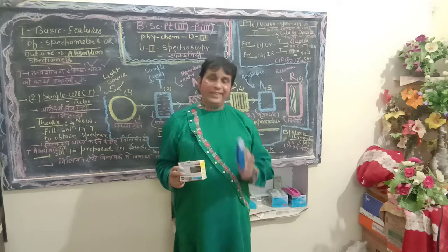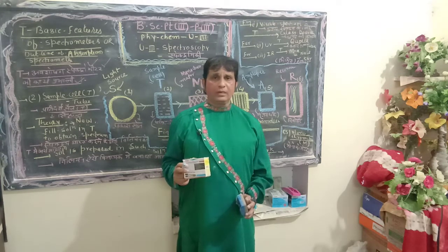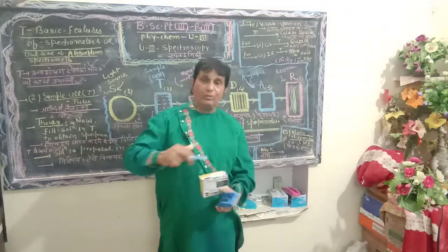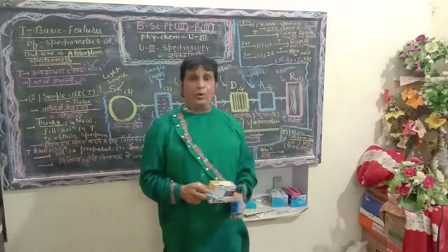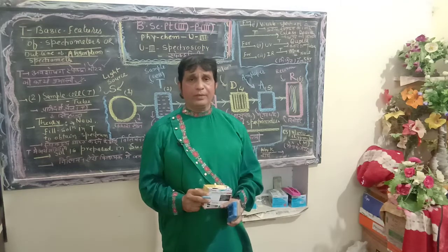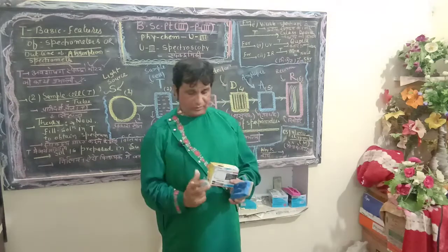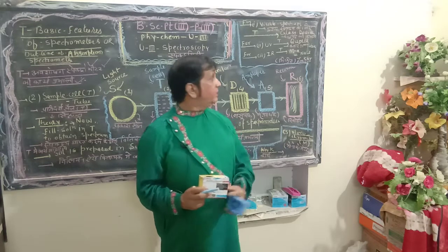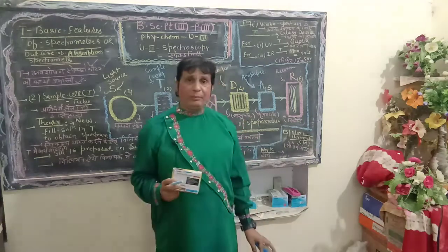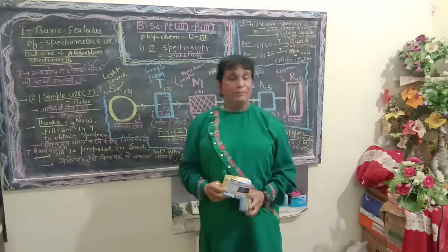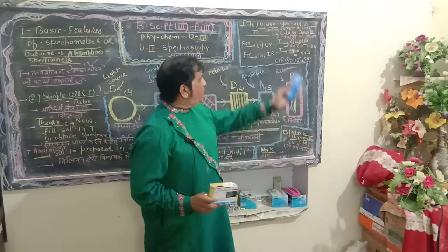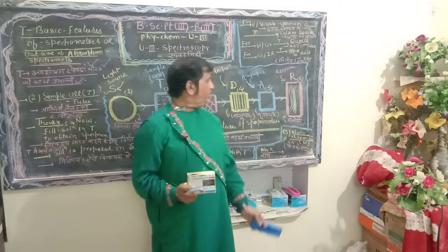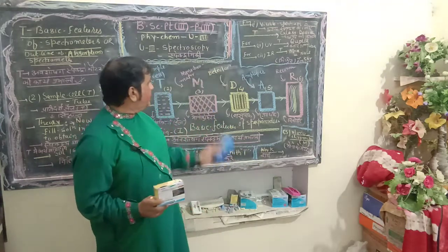To repeat: the sample cell T material used depends on the spectrum type. For visible spectrum, the entire glass device is used. For ultraviolet spectrum, a quartz tube or quartz device is used. For IR spectrum, the sample cell T is made of alkali halides — specifically NaCl and KBr, as I have mentioned on the blackboard. Sample cell T is further connected to the monochromator M.